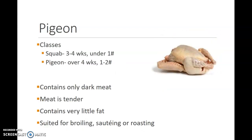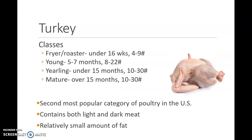Pigeons. Small pigeons are called squabs. They are three to four weeks old and under one pound. Pigeons are over four weeks old and are one to two pounds on the average. Pigeons only contain dark meat. The meat is very tender, contains very little fat, and is well-suited for broiling, sautéing, or roasting.